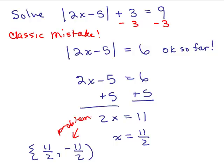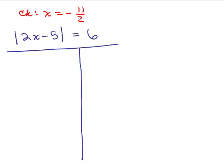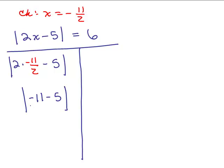Let's show why this does not work by checking x equals negative 11 halves. We compute 2 times negative 11 halves minus 5, which gives negative 11 minus 5, which is negative 16. The absolute value of negative 16 is 16. But on the right-hand side, we have 6 — so no, that is not correct. Those are 2 classic mistakes you want to be careful of.